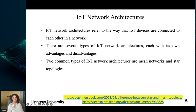IoT network architectures refer to the way that IoT devices are connected to each other in a network. There are several types, each with its own advantages and disadvantages. Two common types are mesh and star topologies.